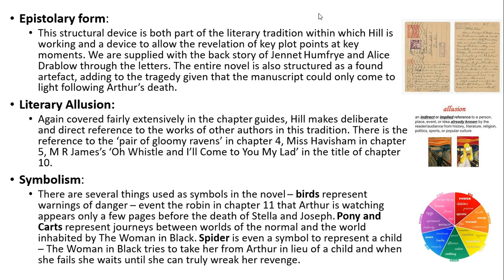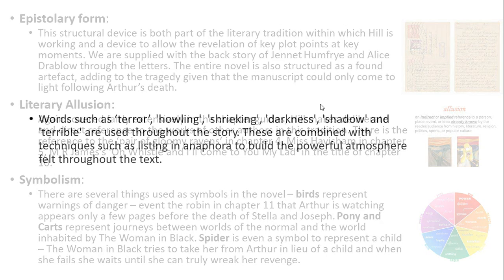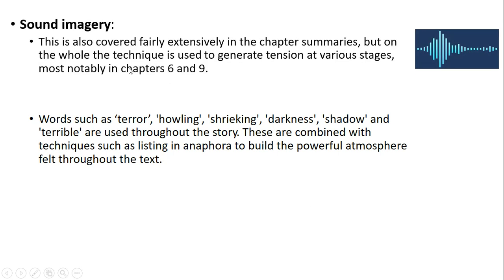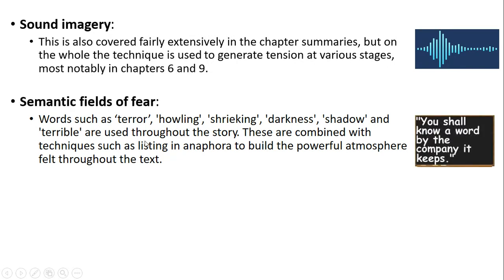Spider is important because Spider is that substitute for the child, and I'm often left wondering: if the dog had been taken from Arthur, would that have been an end to the Woman in Black's revenge? Sound imagery gets used extensively in chapters six and nine. And the semantic fields of terror — we know that semantic fields referring to negative, powerfully negative emotions crop up right the way throughout the novel, which is hardly surprising in a ghost story.